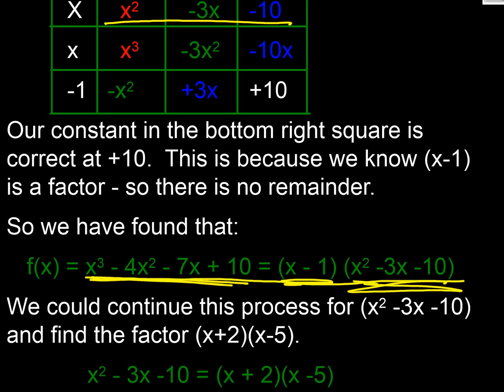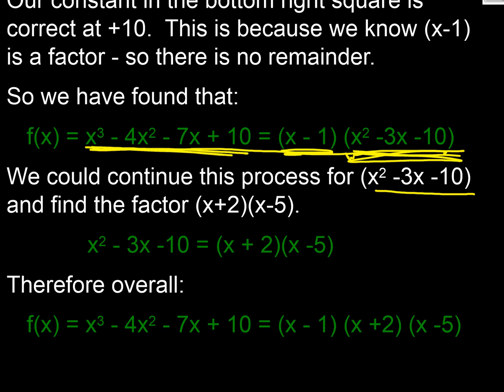What we could do is look for the factors of this quadratic. We could either go through using the factor theorem again, or we could use our quadratic approach from GCSE by multiplying and add up. And we'd find fairly quickly that the two factors here are x plus 2 and x minus 5. So that allows us to say that this expression here, this cubic expression, can be factorised into x minus 1 times x plus 2 times x minus 5. There we go. So that was pretty straightforward.